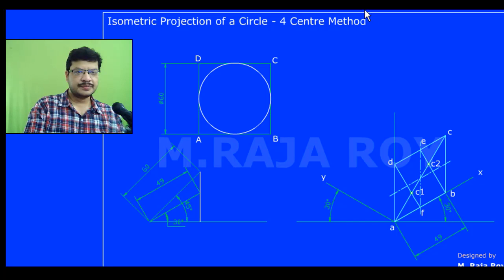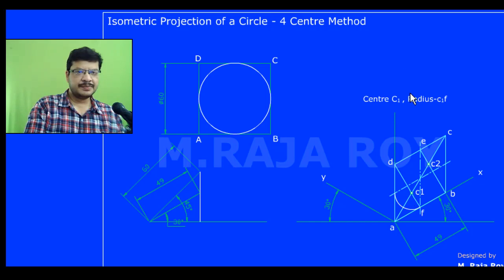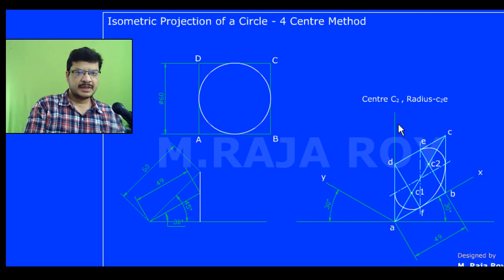Now take center C1, radius as C1F, and draw an arc — this is the first arc using center 1. Next, take center D, radius equal to DF, and using center C2, draw this particular portion of the arc.